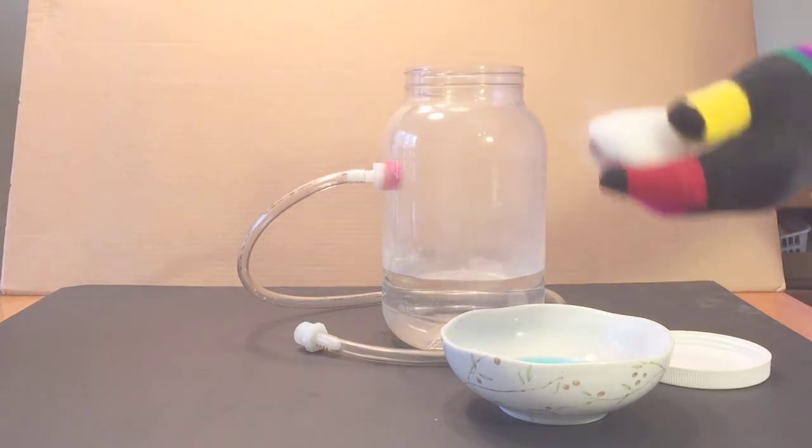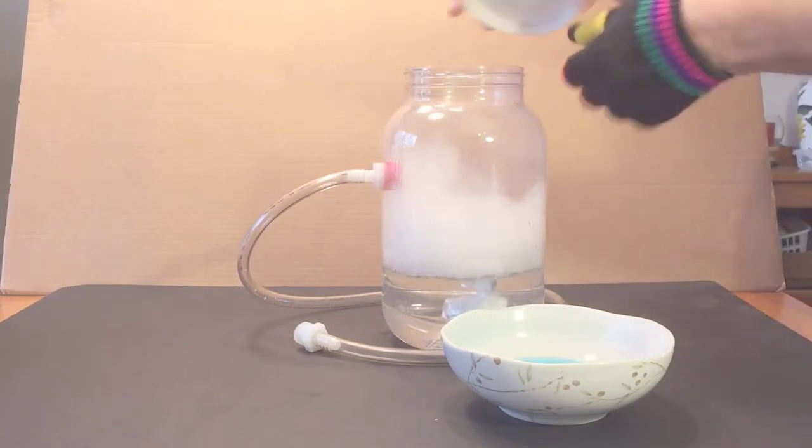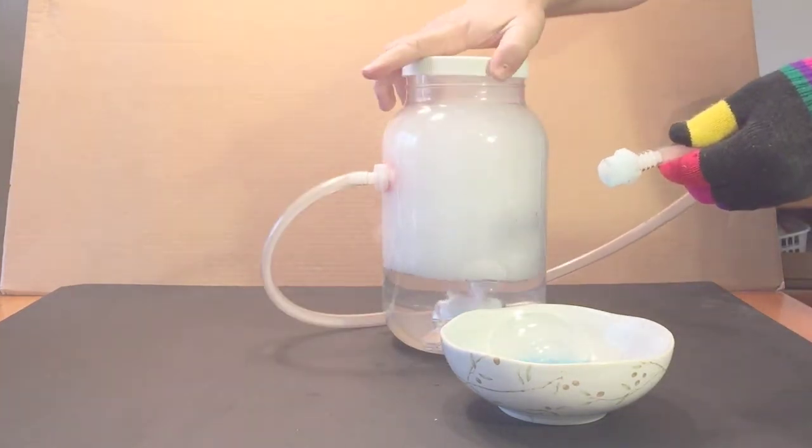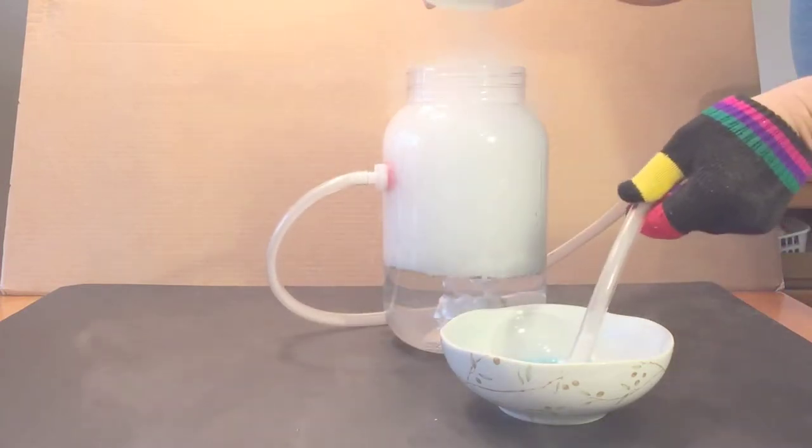Then put the dry ice in and take the tip of the hose and dip it into the bubble solution, and then put the top of the jar on. You'll see now you're ready to make smoky bubbles.